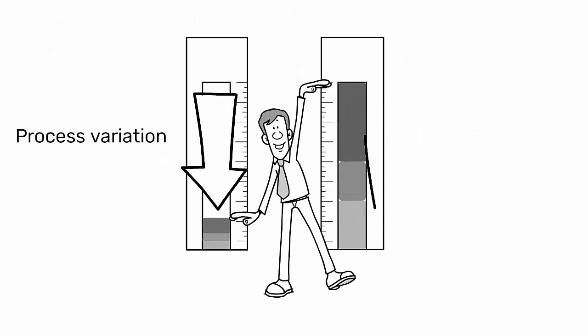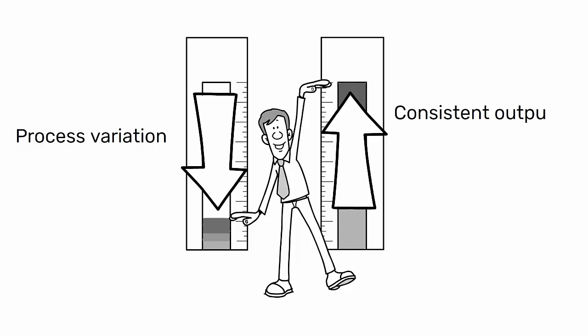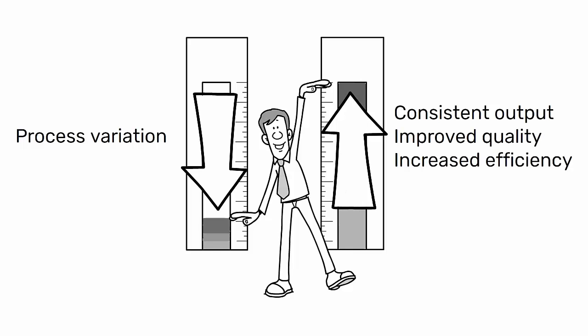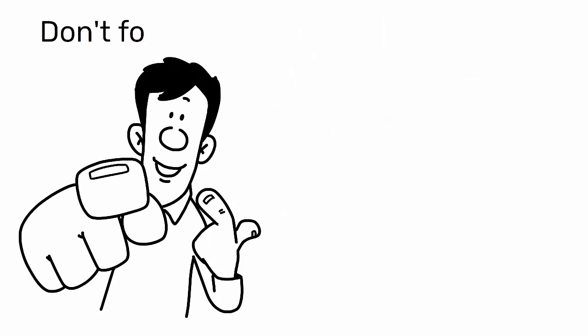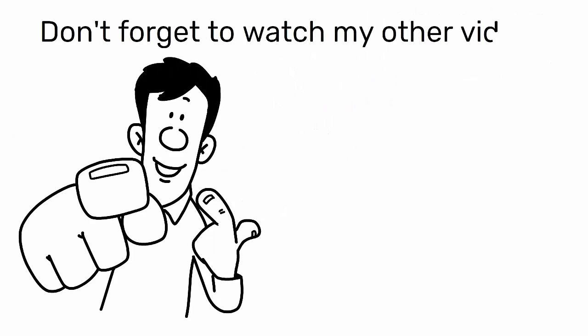By implementing these strategies, you can reduce process variation, leading to more consistent output, improved quality, and increased efficiency. If you enjoyed this video, don't miss my video on what is process variation.